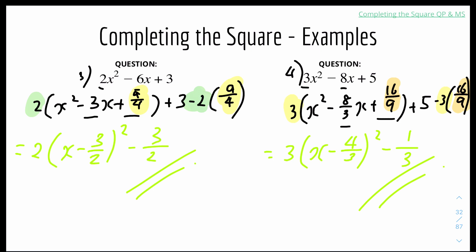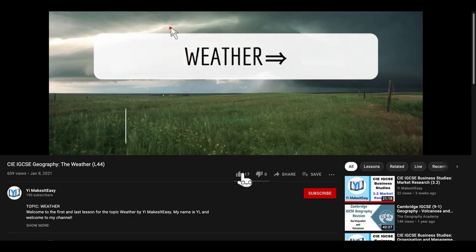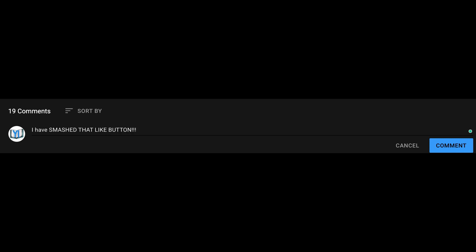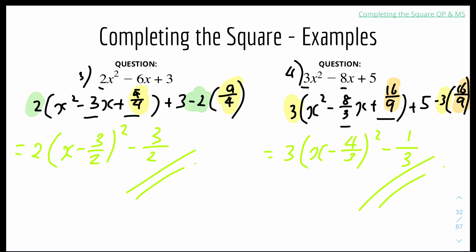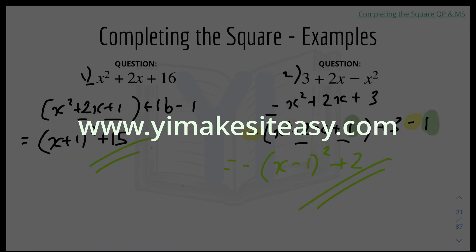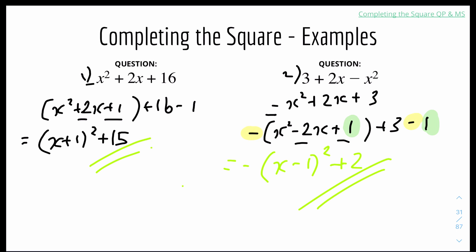And that's it for this rules and examples video on completing the square — covering the basics where a equals 1, and where a is smaller than or bigger than 1. This video might be confusing if you're doing it for the first time, so leave a comment if you don't understand anything. If you enjoyed this video, don't forget to like, subscribe, and ring the notification bell. Check out my Instagram in the description for daily content, and my website at www.yimakesiteasy.com for lesson resources and slides. I hope you find it useful, and I'll see you in the next video on completing the square questions. Until then, stay safe and happy learning!